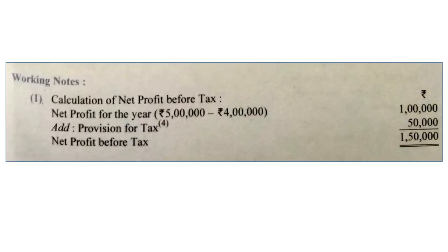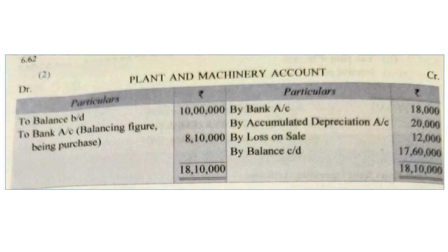Working notes: Point one — calculation of net profit before taxes. Net profit is rupees 1,00,000 plus provision for taxation rupees 50,000 gives NPBT of rupees 1,00,000. Point two — Plant and Machinery Account. The opening balance (fixed asset) is written on the debit side: rupees 10,00,000. Closing balance carried down is rupees 17,60,000. By bank account (sale proceeds) rupees 18,000, by accumulated depreciation rupees 20,000, and loss on sale of machinery rupees 12,000 is written on the credit side. The balancing figure of rupees 8,10,000 represents the purchase.